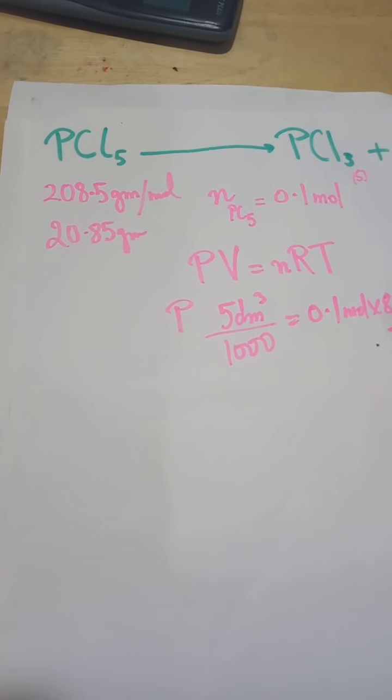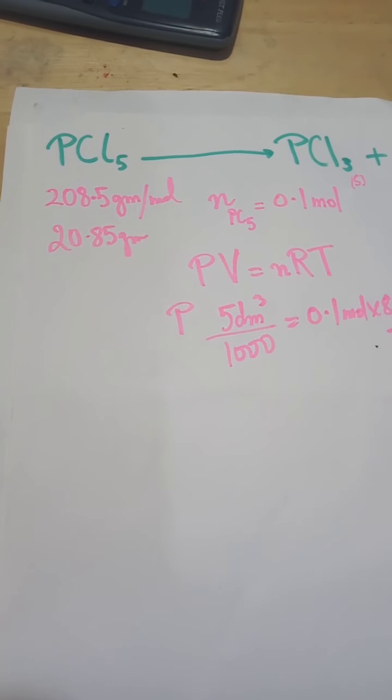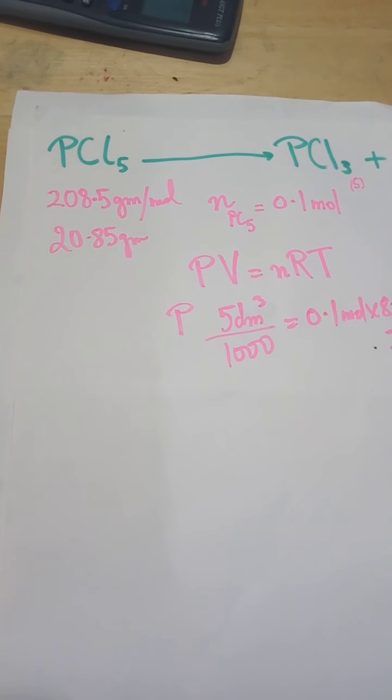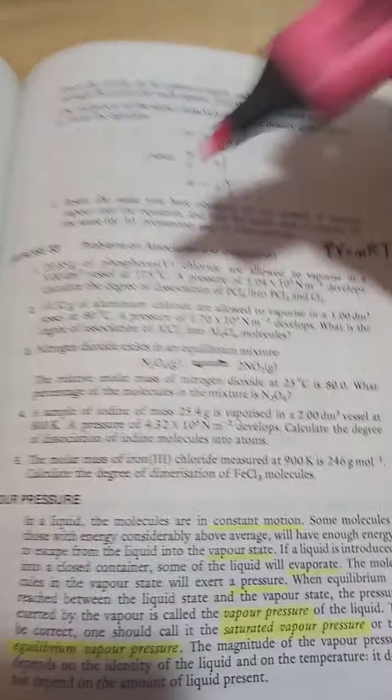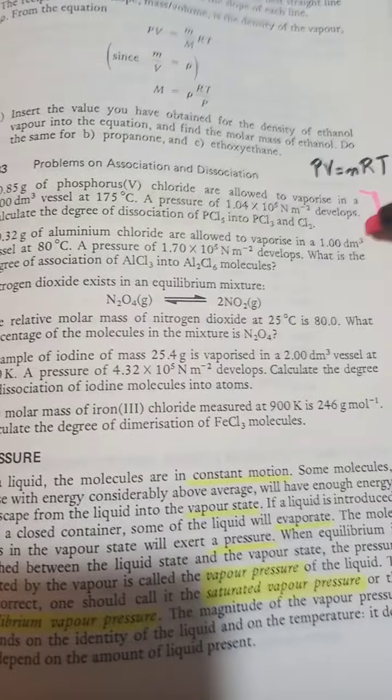The dissociation constant question for phosphorus pentachloride, which has a molecular mass of 208.5 grams. The question asks us to calculate the dissociation constant ratio for 20.85 grams of phosphorus pentachloride dissociating into phosphorus trichloride and chlorine gas. So that remains a solid, and this would evaporate or be collected as a gas, chlorine.